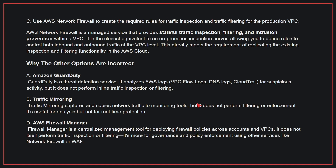Why the other options are incorrect: A — Amazon GuardDuty is a threat detection service that analyzes AWS logs for suspicious activity, but does not perform inline traffic inspection or filtering. B — Traffic mirroring captures and copies network traffic to monitoring tools, but does not perform filtering or enforcement; it's useful for analysis, but not for real-time protection. D — AWS Firewall Manager is a centralized management tool for deploying firewall policies across accounts and VPCs; it does not itself perform traffic inspection or filtering, and is more for governance using other services like Network Firewall or WAF. Therefore, the correct answer is C.